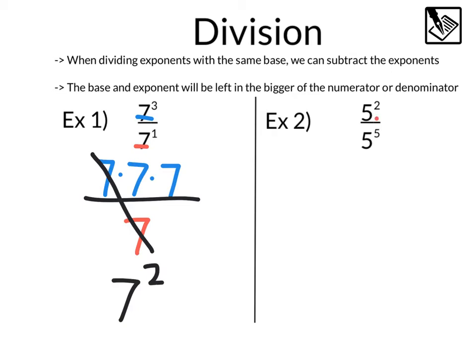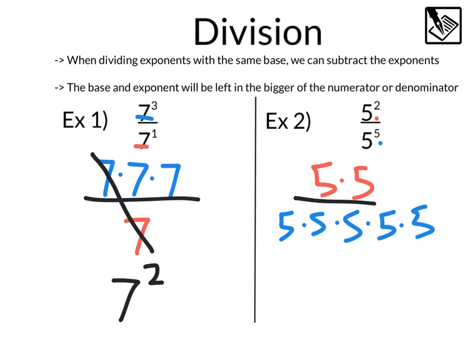Looking at this five squared, we have five times five divided by the five to the fifth power — five times five times five times five times five. This time we have two of those fives: five divided by five would be one, another five divided by five would be one, leaving us with just three fives in the denominator. So we would have one over five to the third. Notice that our shortcut of subtraction could have helped us skip this expanding part: five minus two would be three, with the bigger number in the bottom, giving us that one over five to the third.